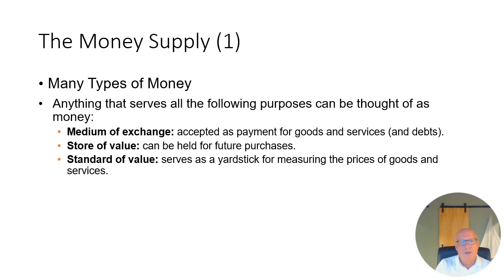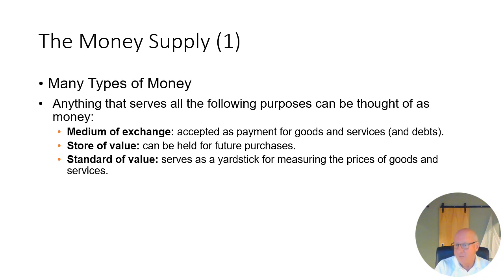Now let's take a look at what the money supply is for our country. But before we get into that, let's think about the types of money and what can serve as money, because there's more than one form of money in existence at any one time. Money has to solve three major issues. First, it has to be a medium of exchange — meaning it has to be accepted for payment for goods, services, and debts — so it settles transactions.